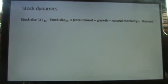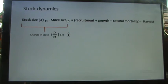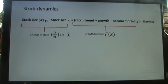Rewriting the population dynamics equation: moving stock size T0 to the left-hand side and denoting stock size as X, the two terms on the left represent change in stock, symbolically written as dX/dt or X-dot. The three terms on the right together form the natural growth function, denoted F(X), and the last term is harvest, denoted H.